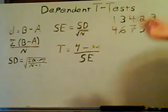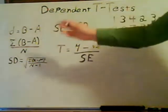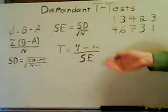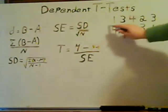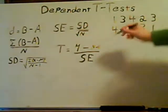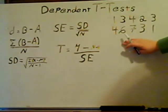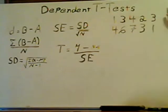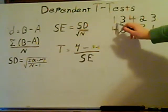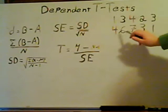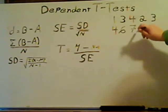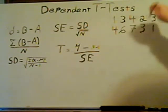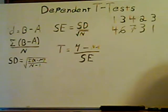The first thing you want to do is set up a formula that says D equals B minus A. You're going to take all of your B data points — in this case the second line — minus all of your A, or the first set of data points. That gives us: four minus one, six minus three, seven minus four, three minus two, and one minus three. Once you do that, you'll end up with three, three, three, one, and negative two.